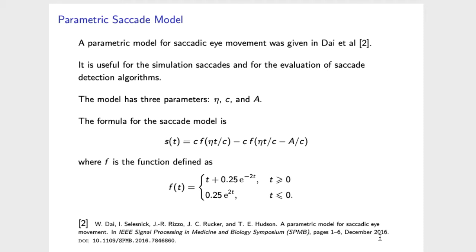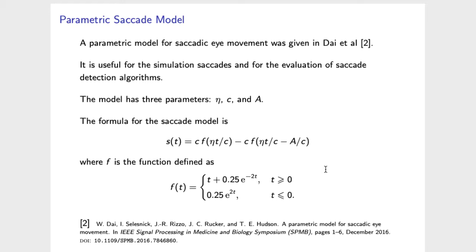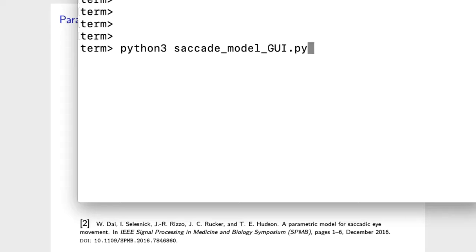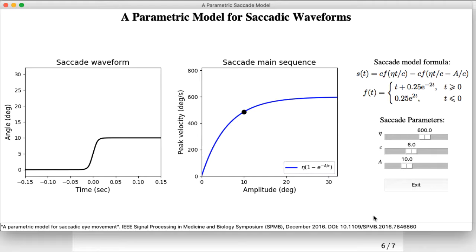To better illustrate the saccade model and the role of the individual parameters eta, c, and a, we show a graphical user interface where we can individually vary each of those parameters. It is a program written in Python. The graphical user interface shows the saccade — the angle of the eye as a function of time — and it shows the main sequence, the peak velocity as a function of the amplitude. Here we have three sliders by which we can vary each of the parameters of the saccade model.